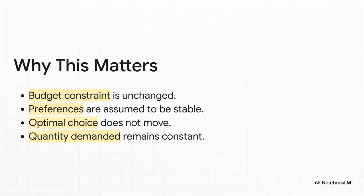Let's connect all the dots. The math just proved that the budget constraint — the list of things you can afford — is totally unchanged. We also assume your preferences, what you like, haven't changed. So if what you can buy hasn't changed, and what you want to buy hasn't changed, why would your final decision change? It wouldn't. Your optimal choice stays put, and that means the quantity you demand for any good remains exactly the same. It's a clean, logical argument.